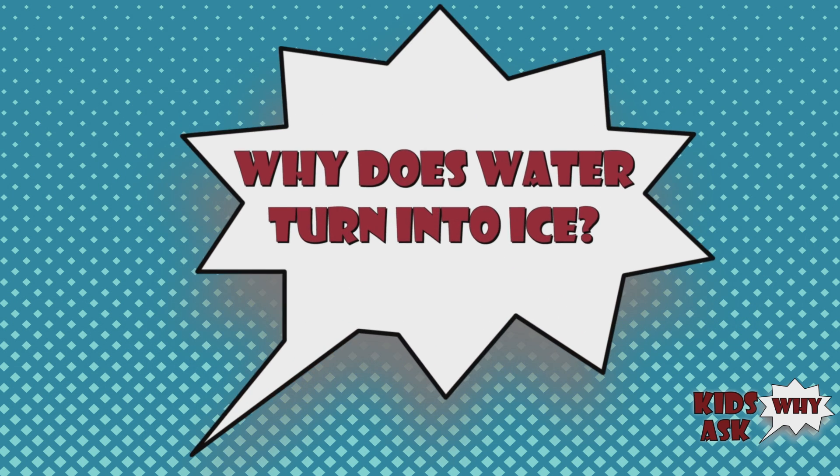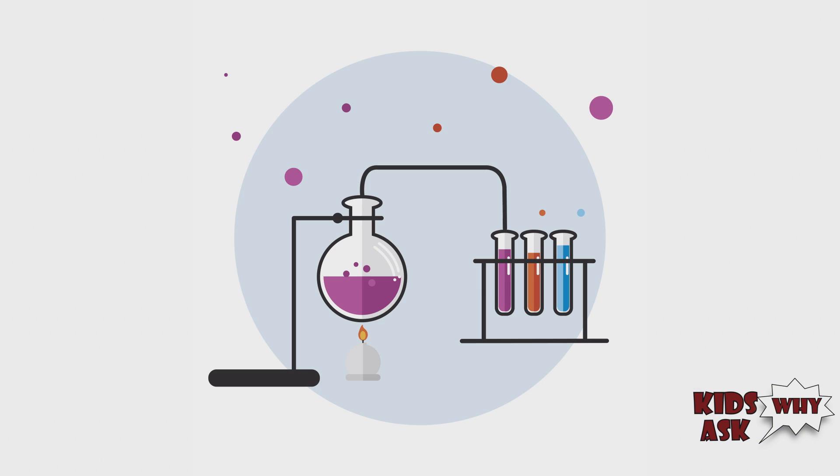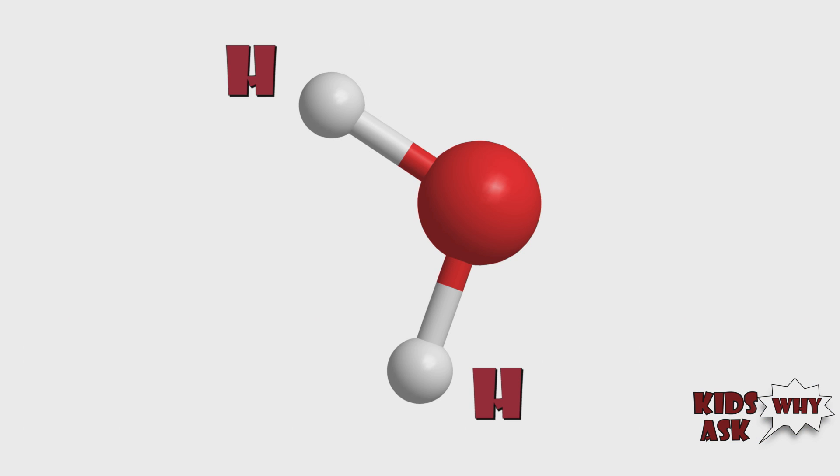Why does water turn into ice? Water is made up of two elements, hydrogen and oxygen. Its chemical formula is H2O. Each molecule of water is made up of two hydrogen atoms bonded to a single oxygen atom.